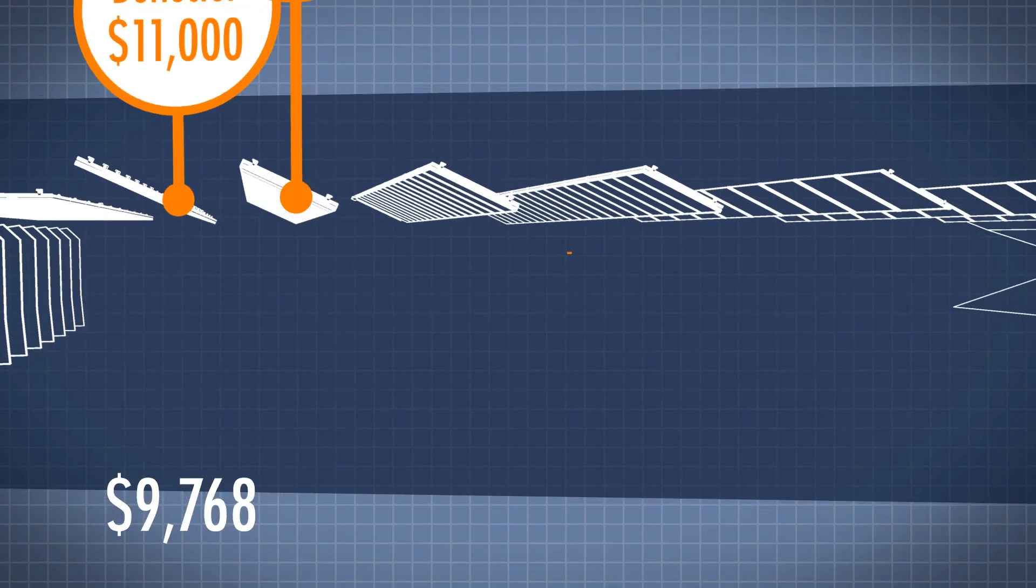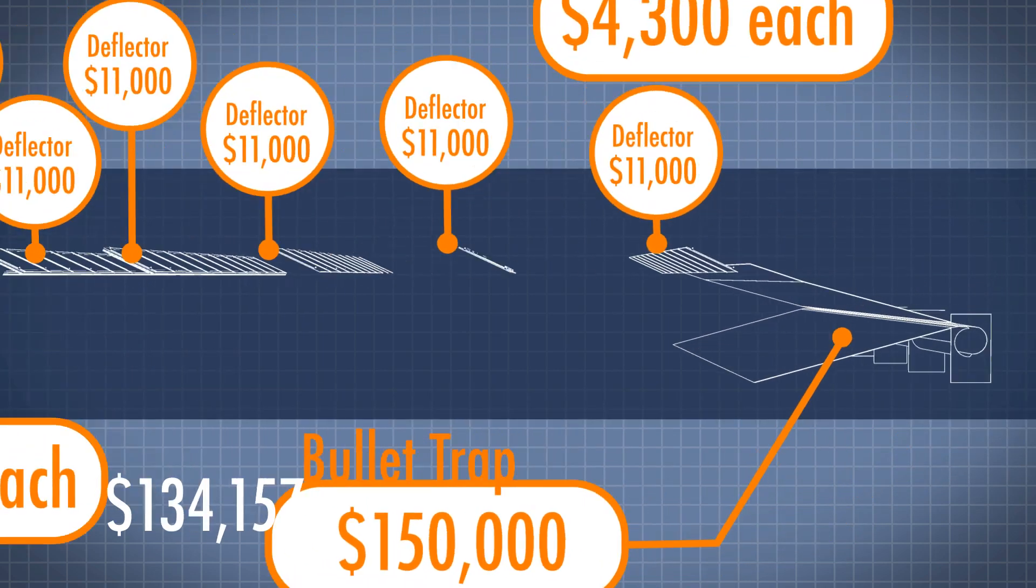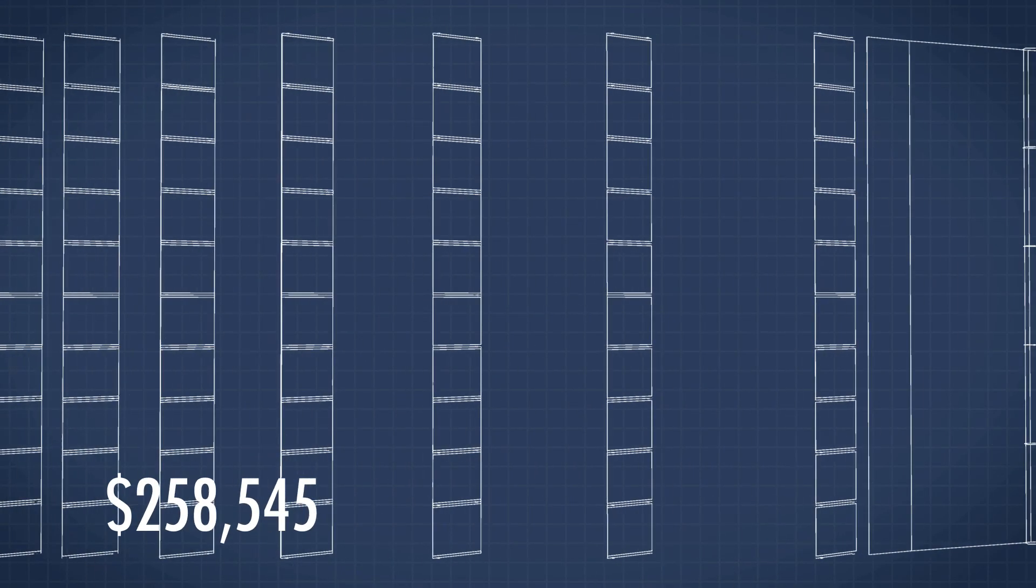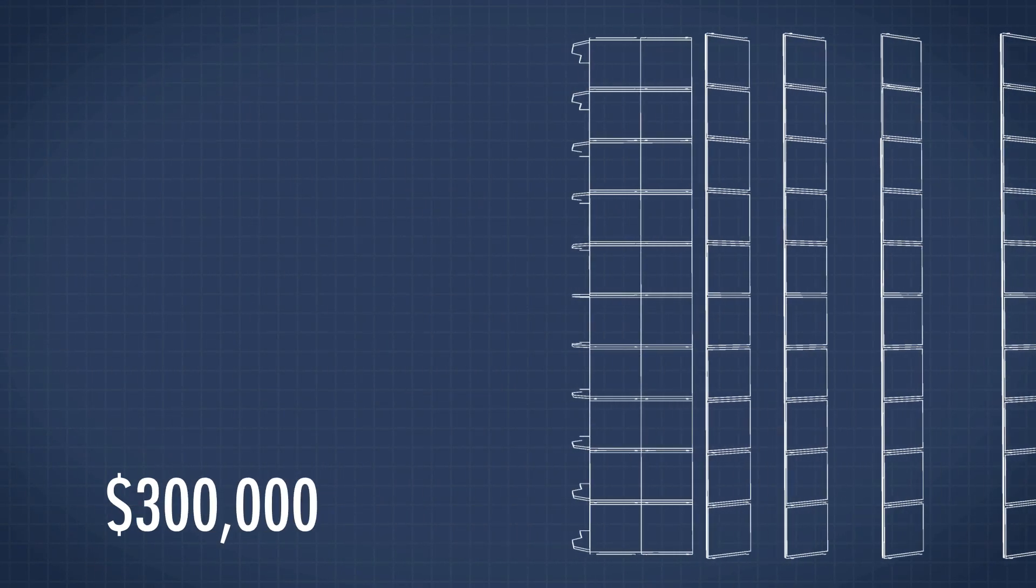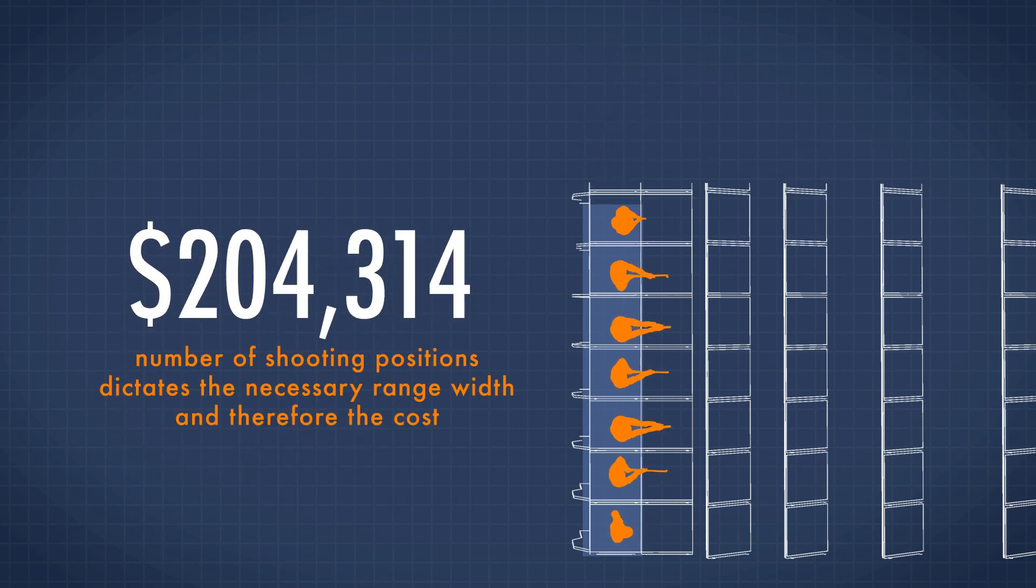One of the major costs associated with building a shooting range is the specialized range equipment. The components necessary to make the range hardened against bullets typically require a large amount of backstopping and shielding on the walls and ceilings. This expense of backstopping and shielding has always been related to the number of shooting positions, which dictates the necessary range width.